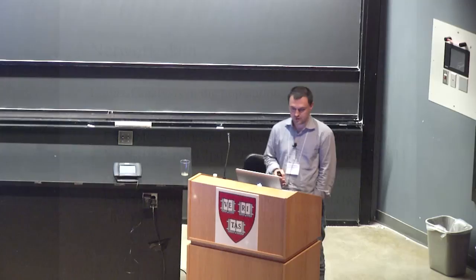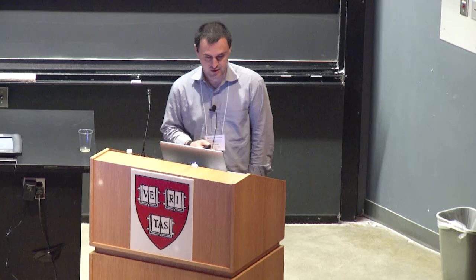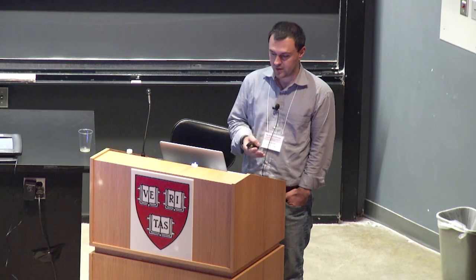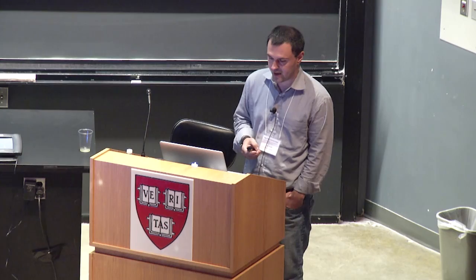Networks oftentimes are used as tools to explain dependence patterns in data. In this setting, you may have high-dimensional vectors yi coming from a normal distribution, and there's a link between the inverse variance-covariance matrix and a graph. In this case, the network is estimated from data and represents dependence patterns. In this talk, like in Guido Imbens's talk earlier, we're going to have network data. The unit of analysis here is yij — it could be a binary variable or the number of emails person i sent to person j. This type of data is often displayed as a network — network as data.